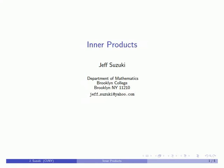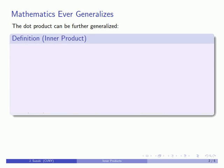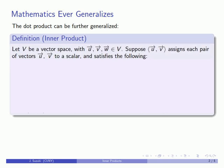One of the main activities of mathematics is generalizing concepts. In this case, the dot product can be generalized to the notion of an inner product. Suppose I have some vector space with u, v, and w vectors in our space. We're going to define an inner product to be a function that assigns each pair of vectors u and v to a scalar, where the inner product satisfies the following properties.